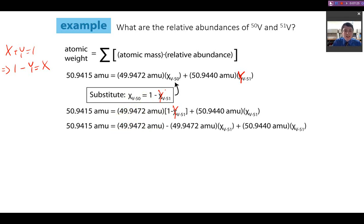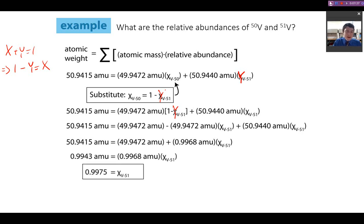You can then plug in the values and solve. Now, if you're not sure how to do that algebra, that's when you should definitely come and get some help in the help session or office hours. That gets us then a fractional abundance for vanadium-51 of 0.9968. Plugging that back into the original equation, we can see that the fractional abundance of vanadium-50 is 0.0025.